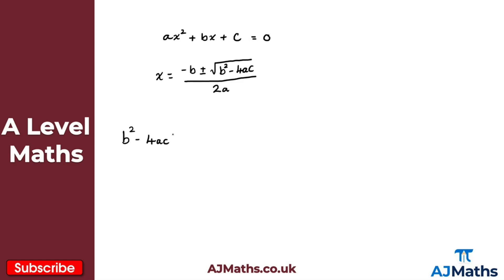This is the discriminant. In terms of notation, we use the Greek letter delta to represent it, so the discriminant delta is equal to b squared minus 4ac. The reason this is important is that for a quadratic equation set equal to zero, it tells us how many roots the equation has.